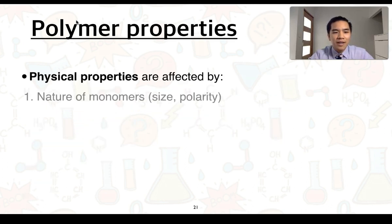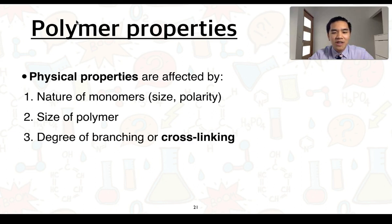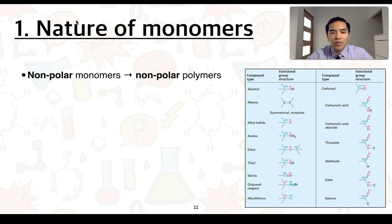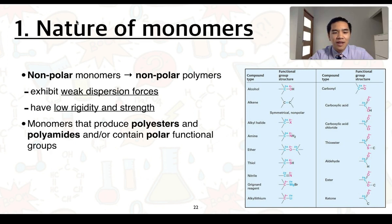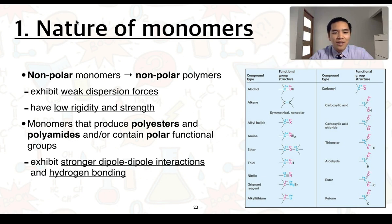These physical properties are affected by, firstly, the nature of the monomers — that could be their size and/or polarity — as well as the size of the polymer or the degree of branching or cross-linking. Non-polar monomers will produce non-polar polymers, which exhibit weak dispersion forces between molecules. This typically means they have low rigidity and strength. Whereas monomers that produce polyesters and polyamides, or contain polar functional groups, exhibit stronger dipole-dipole interactions and hydrogen bonding, and are therefore generally stronger and more rigid.